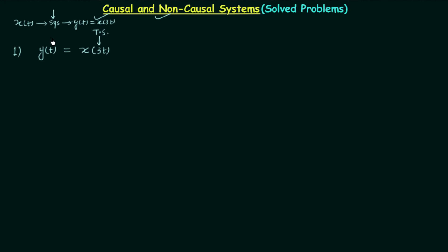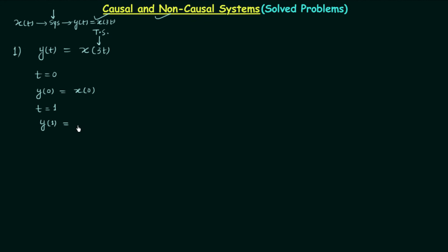Now we need to find out whether the system is causal or non-causal. To do this, we will first take t equal to 0. When t equals 0, the output will be y(0) equal to x(0). So the present output is dependent on the present input, so you would say the system is causal. But if we take t equal to 1, the output will be y(1) equal to x(3).